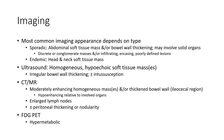Imaging: the most common imaging findings are bulky peritoneal-type masses. At the bowel or soft tissue level, lesions may involve solid organs, the spleen, or present as conglomerate masses. These are infiltrating, encasing, poorly defined lesions. In the head and neck, soft tissue masses are seen. On ultrasound: homogeneous, hypoechoic soft tissue masses with bowel wall thickening, plus or minus intussusception.